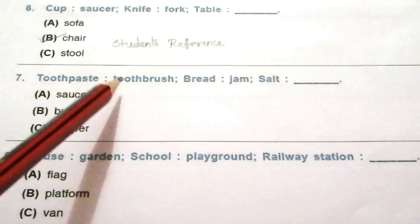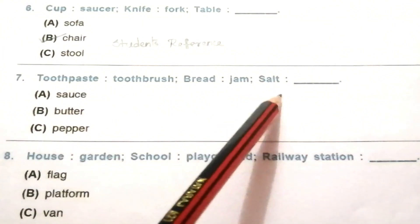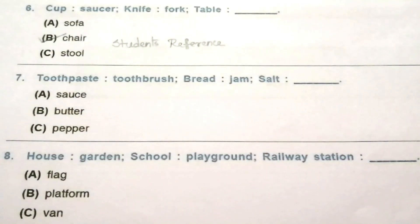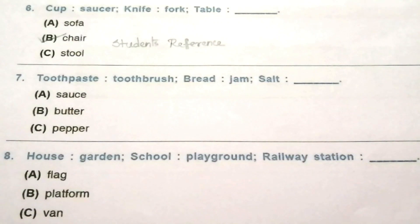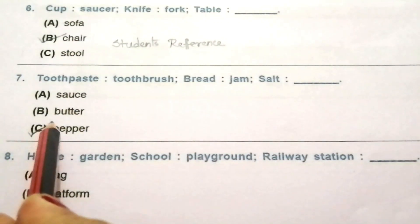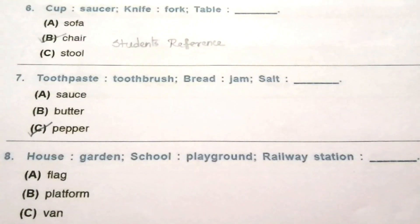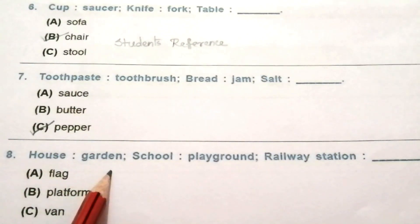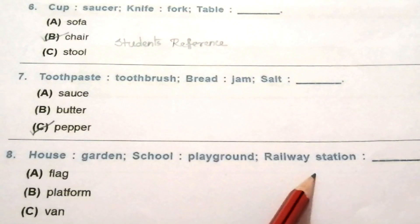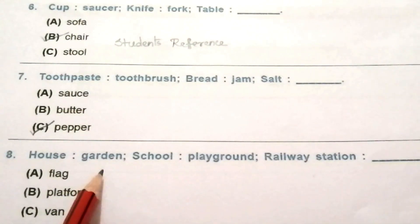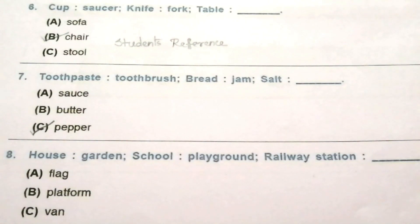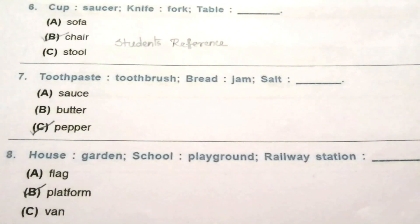Question 7: toothpaste, toothbrush; bread, jam; salt — blank. Question 8: sauce, butter, pepper. The answer is C, pepper. Salt — pepper. Question 8: house, garden; school, playground; railway station — blank. Flag, platform, van. The answer is B, platform. Railway station — platform.